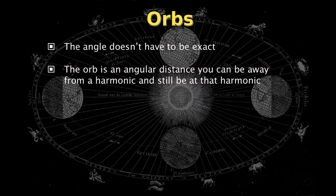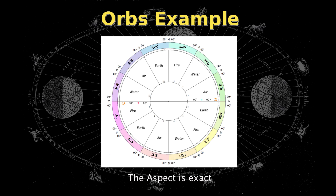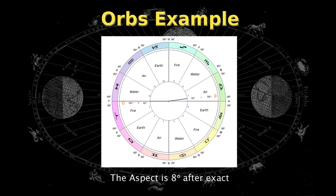The orb is always calculated the same way: 16 degrees divided by the harmonic, and this can be on either side. Take the second harmonic for example — its orb is 16 degrees divided by 2, for 8 degrees. To give you an idea of what that looks like, you can have an exact opposition, but it can also be either 8 degrees before or 8 degrees after being exact and still be considered under the second harmonic.